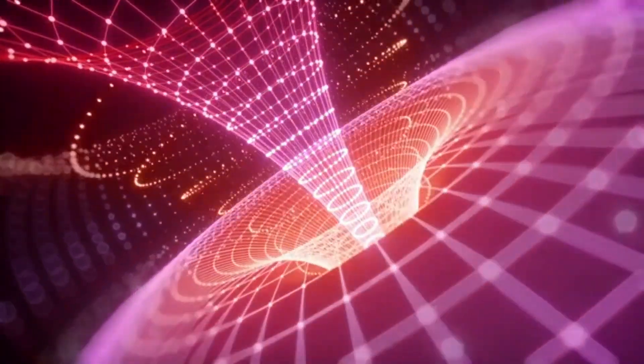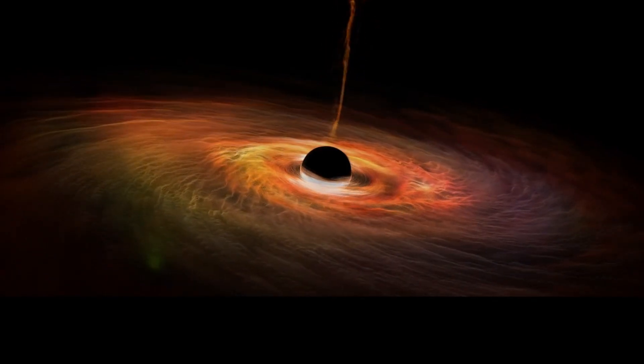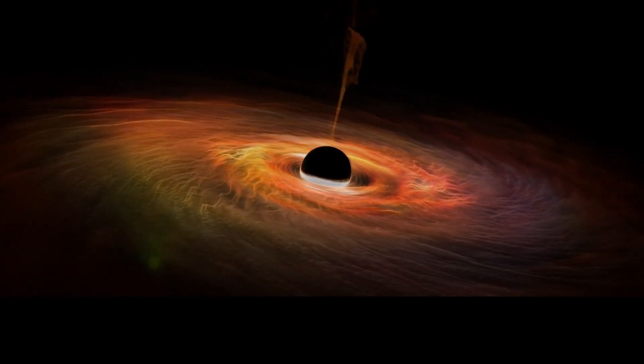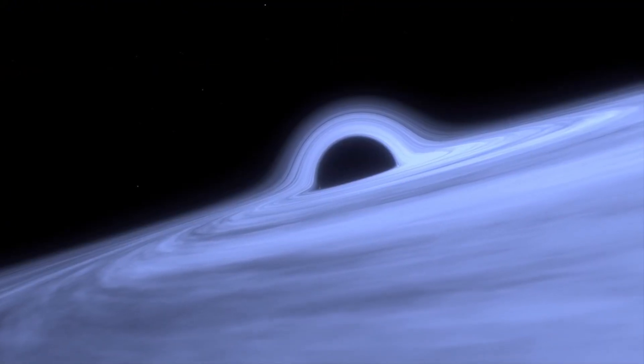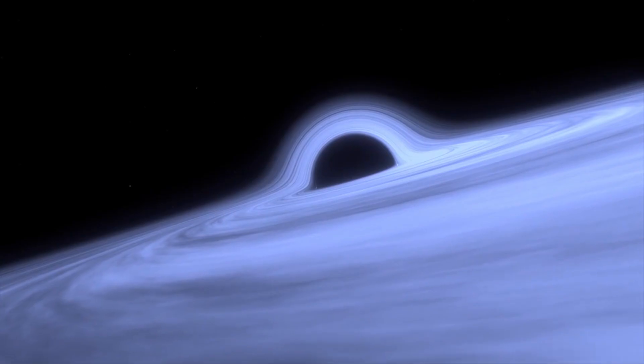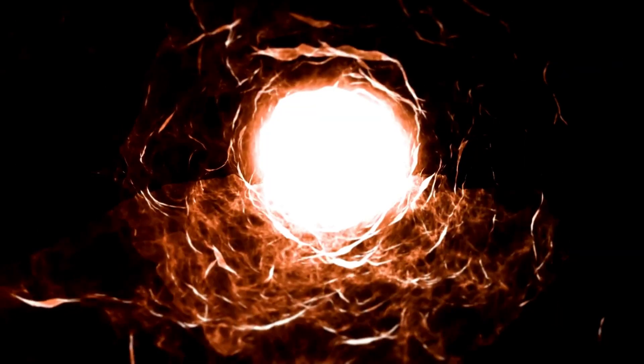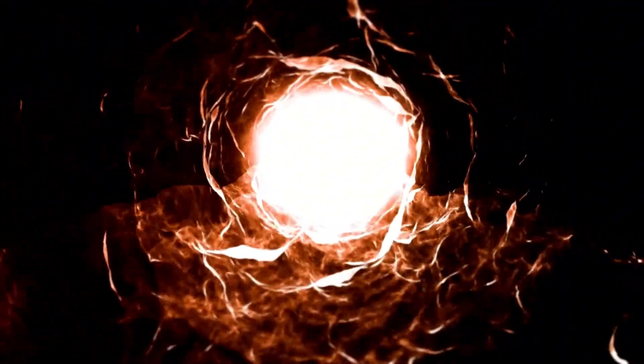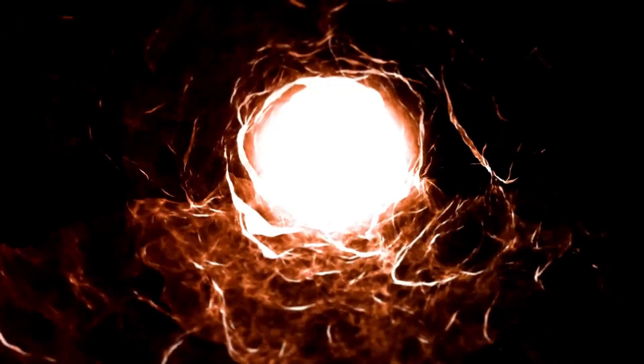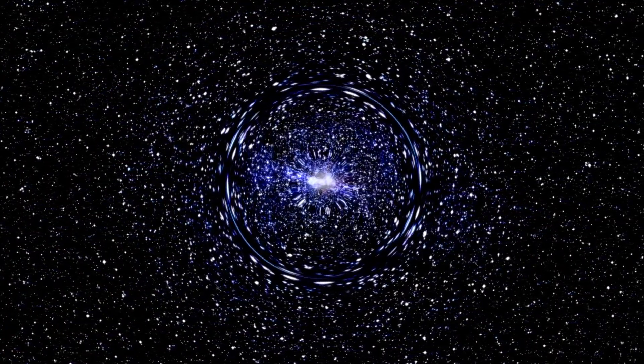NASA researchers have focused on a particularly powerful galaxy, M87, where they observed a vast whirlpool of hydrogen gas rotating at an astounding speed of 1.2 million miles per hour. Despite the immense forces at play, the gas didn't fly apart, leading scientists to conclude that there must be a massive object at the center of the galaxy holding it all together. This object turned out to be a black hole weighing billions of times the mass of the Sun.